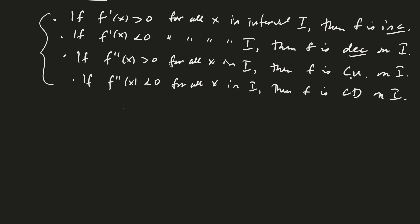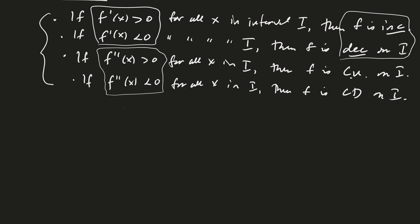In the last video we talked about where a function is increasing or decreasing. To summarize, this chart captures the key ideas: if the first derivative is positive, then f is increasing; if negative, f is decreasing. Similarly, if the second derivative is positive or negative, we have concave up or concave down on the interval. Knowing where your derivatives are positive or negative is really important.